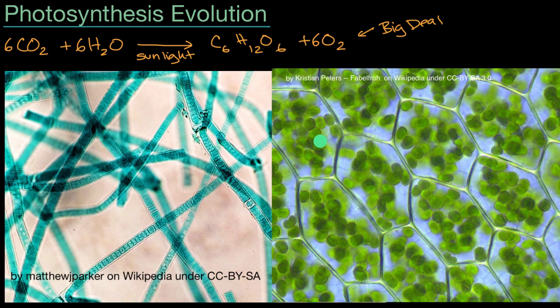that chloroplasts, and right over here, you see plant cells with visible chloroplasts in them, that chloroplasts are actually descendants of those ancestors of cyanobacteria. Cyanobacteria would be other descendants of them, but these are the ones that started to live in symbiosis with what would later become plant cells.